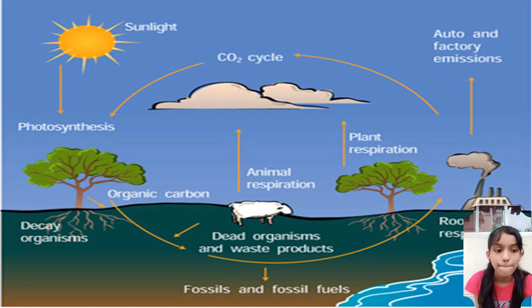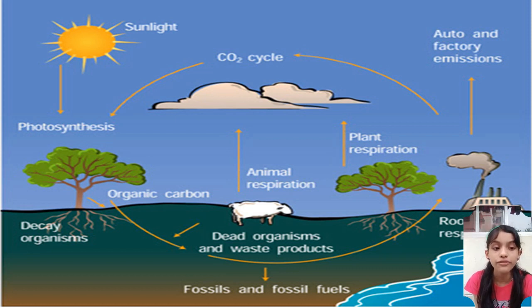By examining air bubbles in ice cores taken from Antarctica, scientists can calculate that the concentration of carbon dioxide in the atmosphere over the last 650,000 years has been climbing. Today, the amount of CO2 in the atmosphere is significantly greater than it was 650,000 years ago, and that rise is essentially entirely due to the burning of fossil fuels.